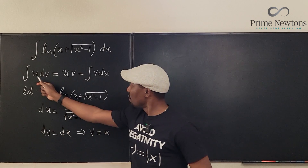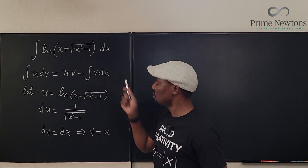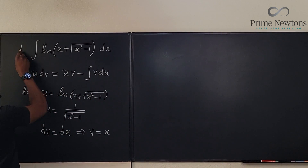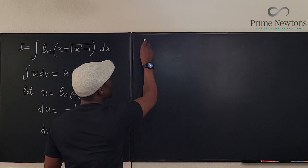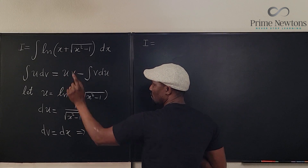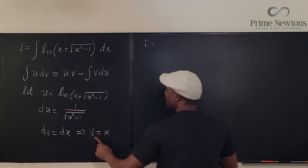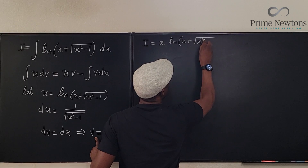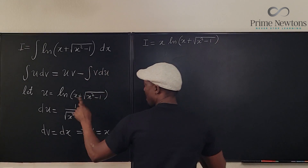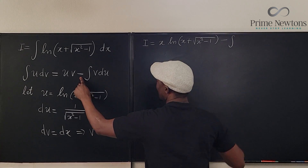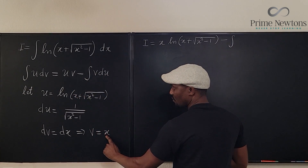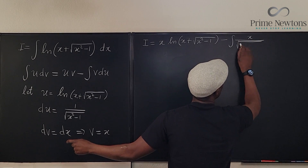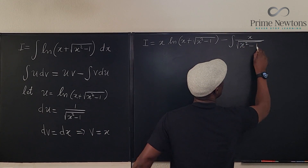So let's apply the formula: the integral of u dv equals u times v minus the integral of v du. u times v is x times ln of x plus the square root of x squared minus 1, minus the integral of v du — which is the integral of x over the square root of x squared minus 1, dx.